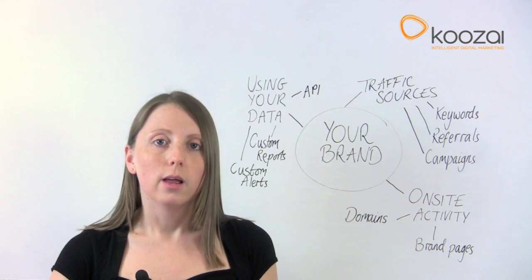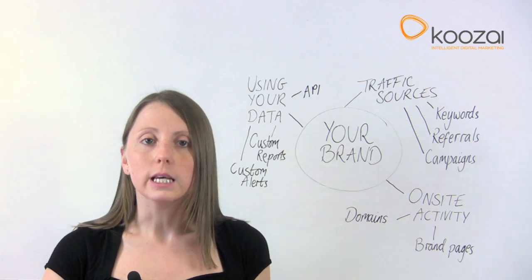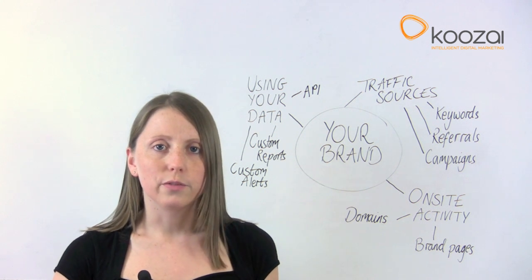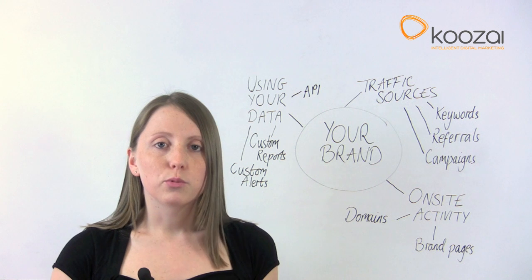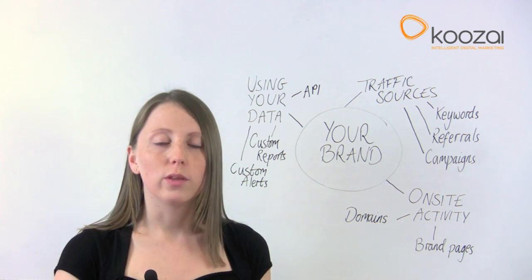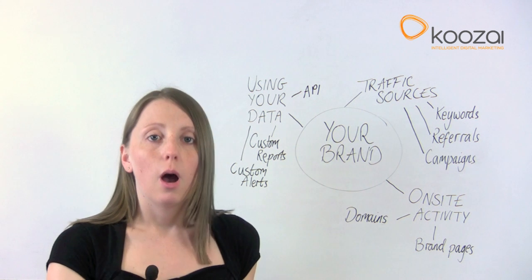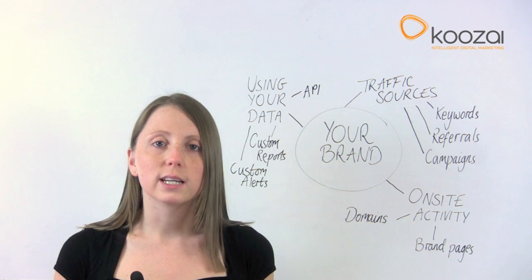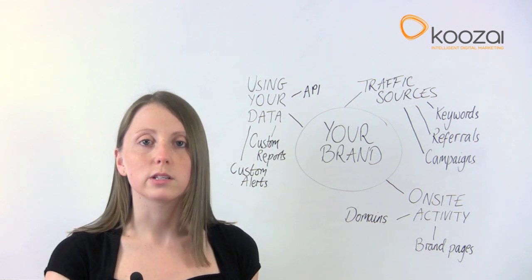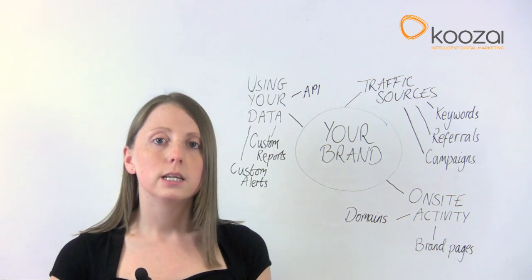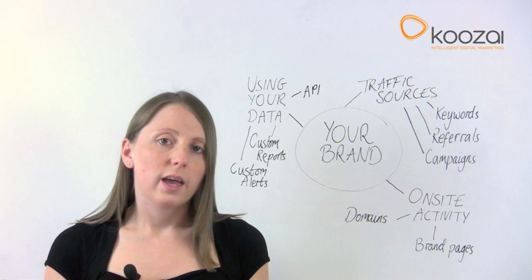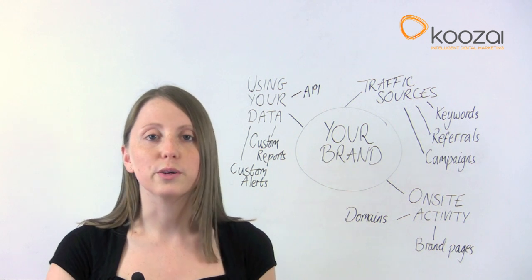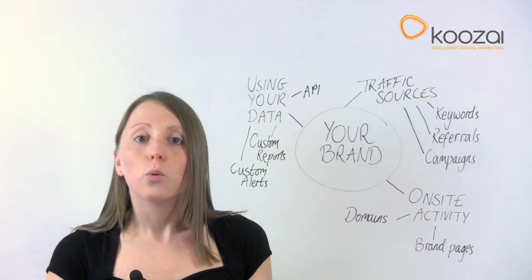This is a tool from Google — a URL builder basically. You put in your campaign terms, source, medium, and that sort of information. It then provides Google Analytics with specific information about that link, enabling a lot more functionality. You can split test brand things going out on the web to see which ones work best.